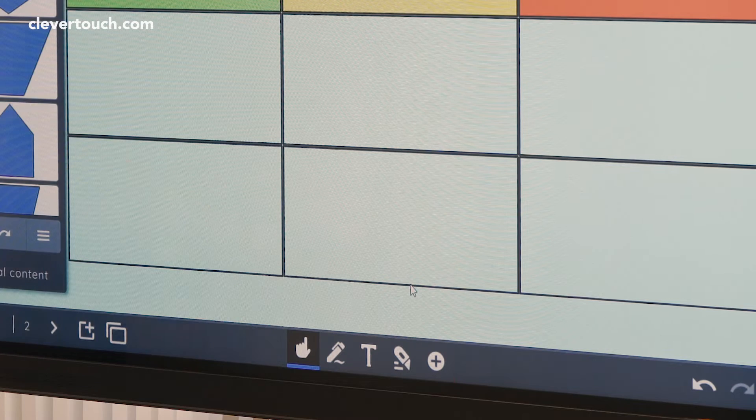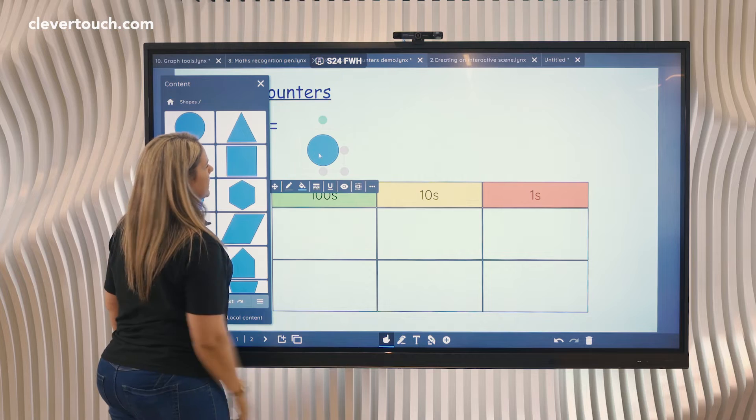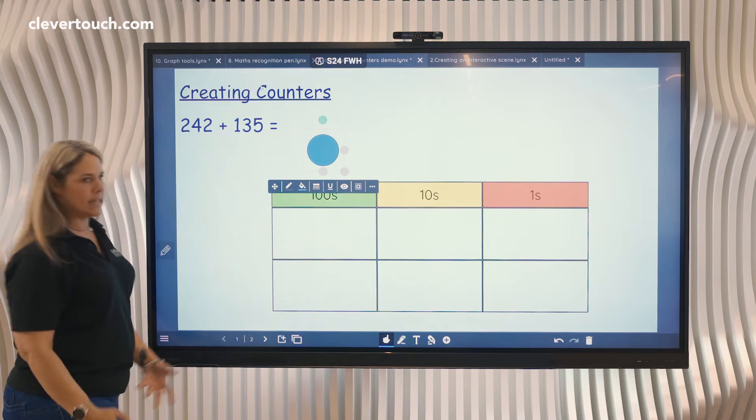I'm simply going to click on the shapes, drag one in, and that's all I need to do.